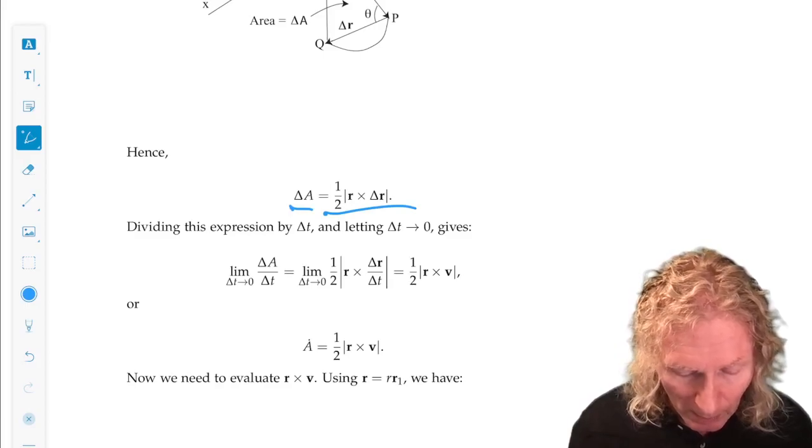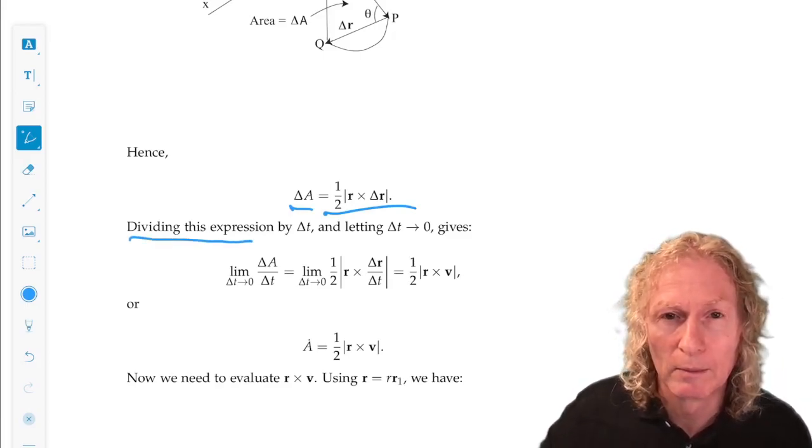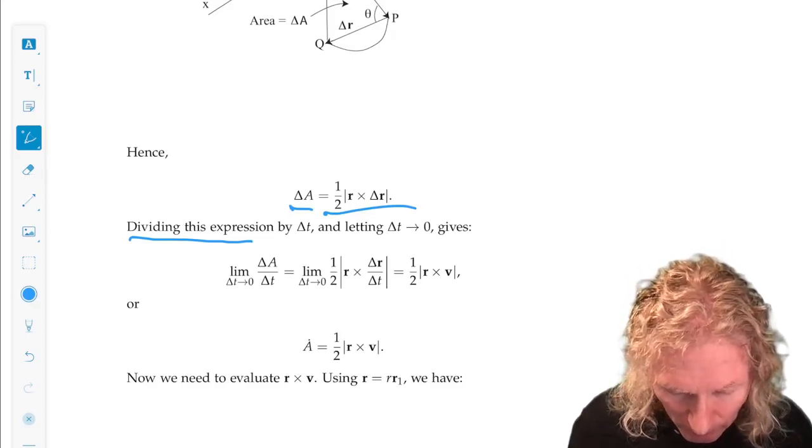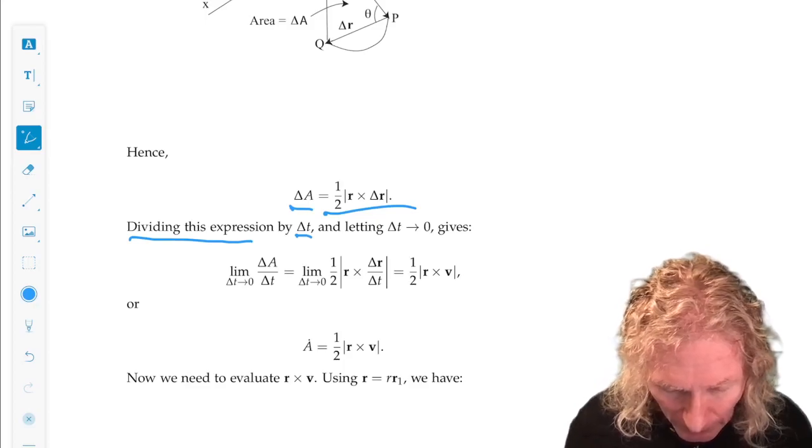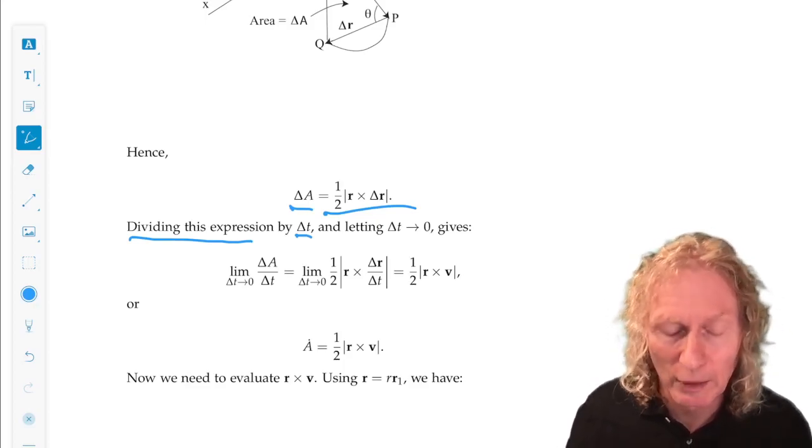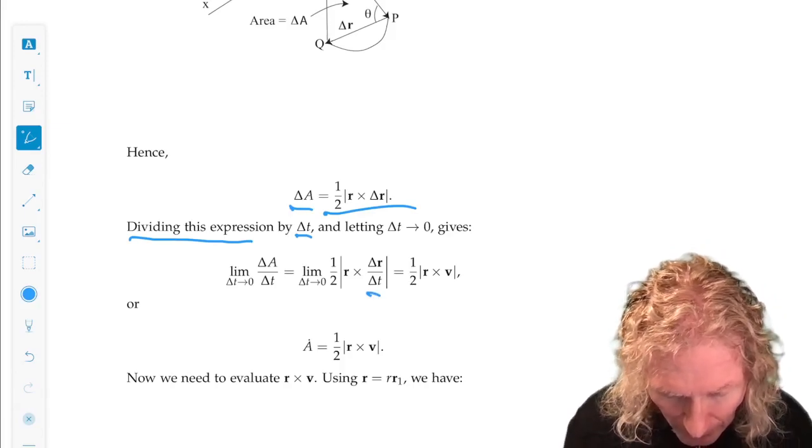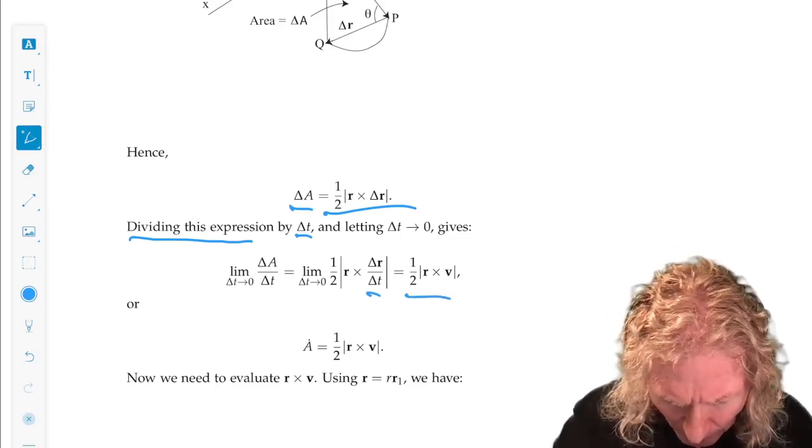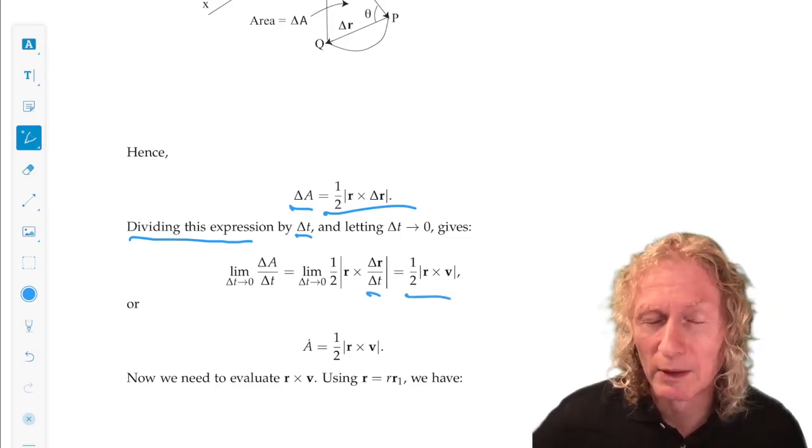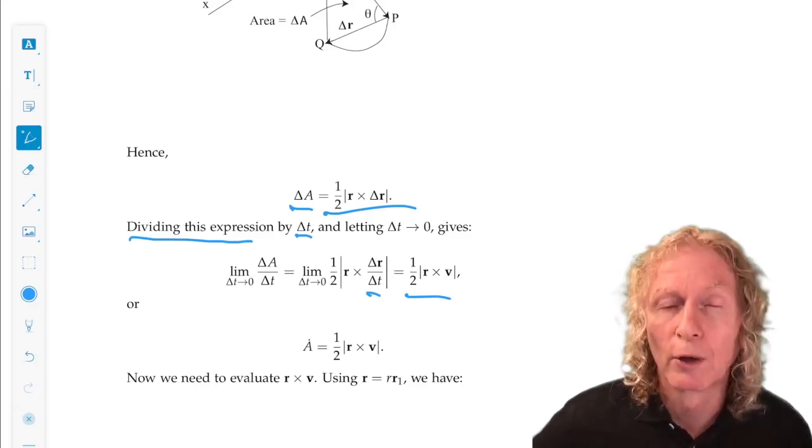Now we want to look at the rate of change of that area, so we divide the changing variables by Δt. That will be ΔA and Δr. Looking at the limit as Δt goes to zero, ΔA/Δt becomes ½r × v.